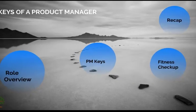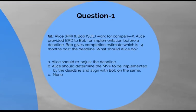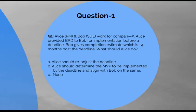Now let us go over some fitness checkup questions. Alice, who is a product manager, and Bob, who is an SDE, work for company X. Alice has provided a BRD to Bob for implementation before a business deadline. Bob gives a completion estimate which is approximately 4 months post the deadline. What should Alice do in such a situation? Choose from the following options: A. Alice should readjust the deadline. B. Alice should determine the MVP to be implemented before the deadline and align with Bob on the same. C. None of the above. The correct answer is B. In the tech industry, it is very common that the implementation timeline may vary from the business deadline. In such cases, the PM should outline the MVP needed to launch.